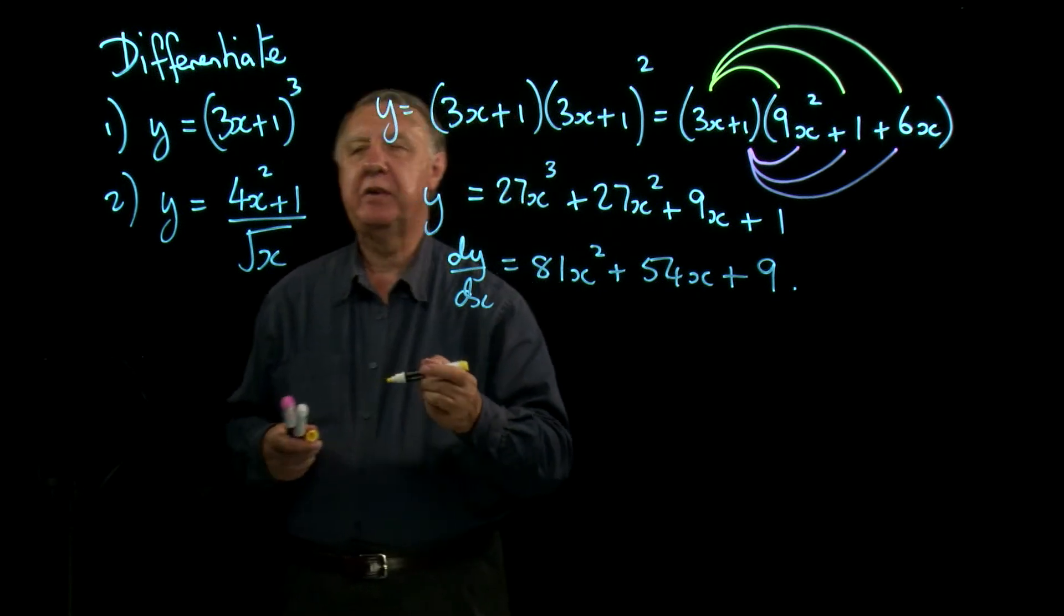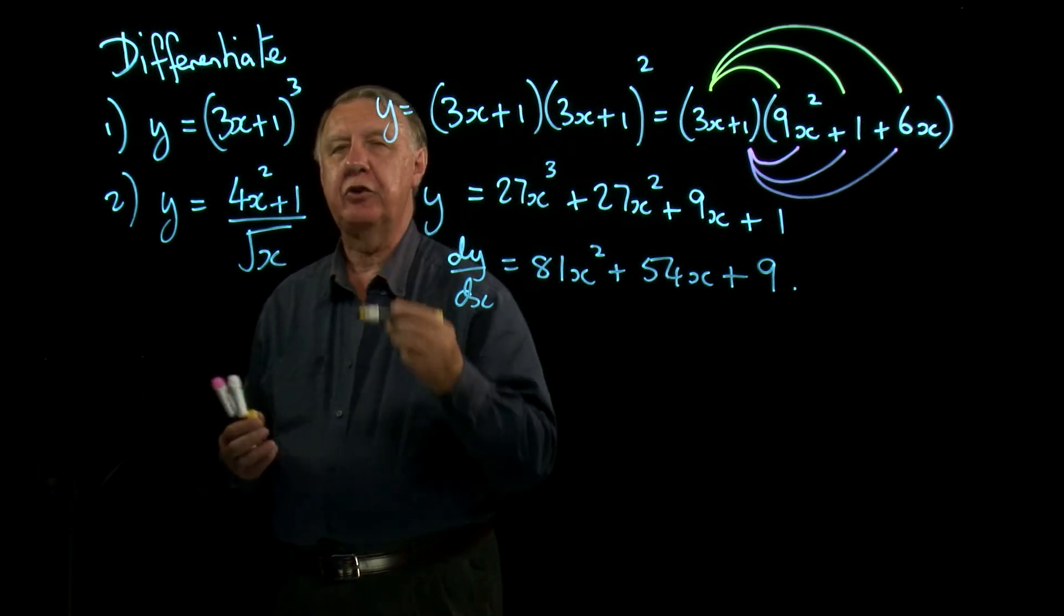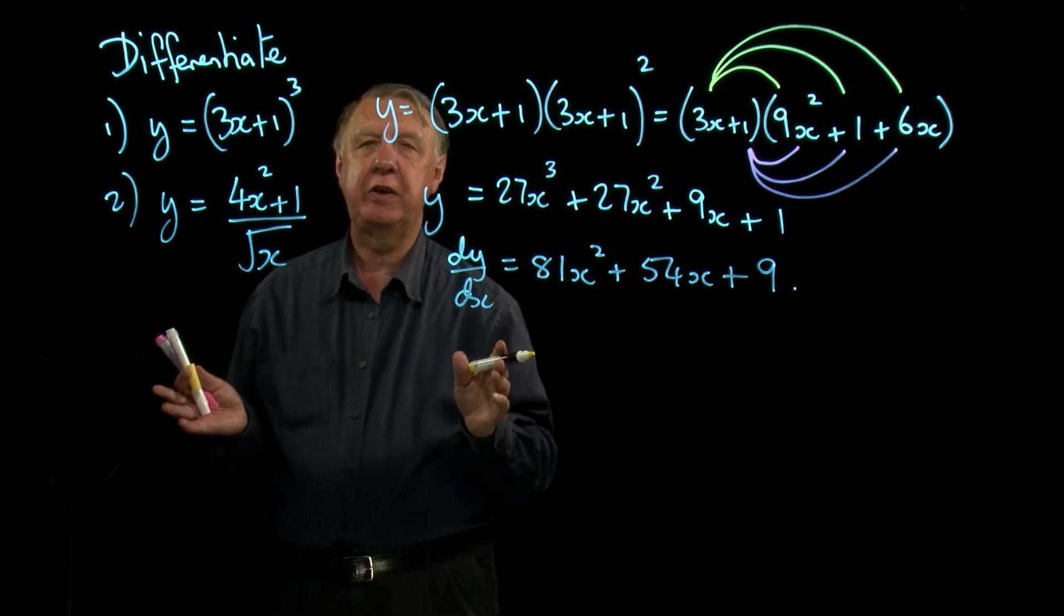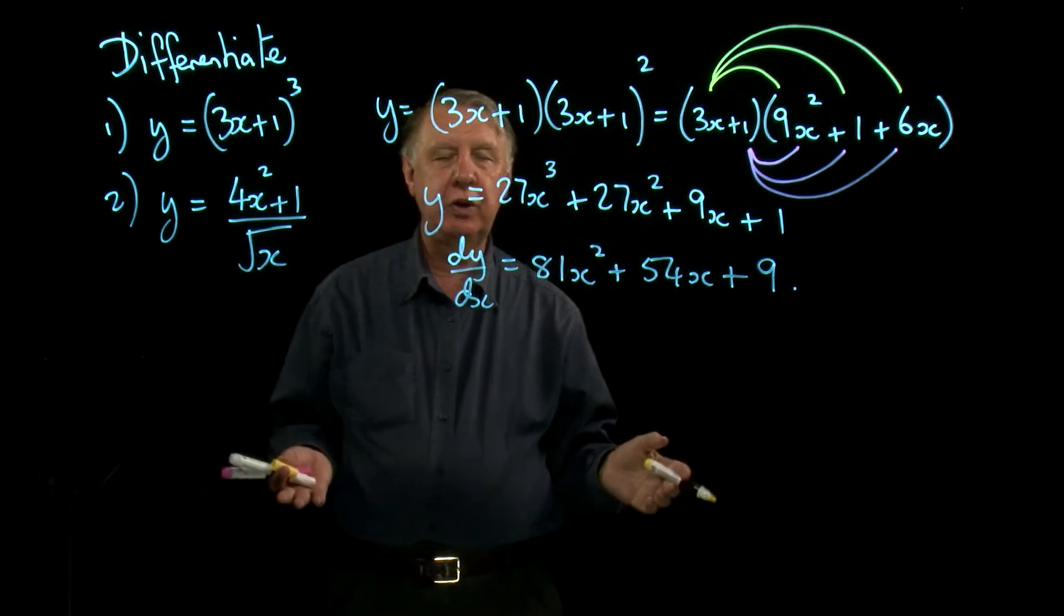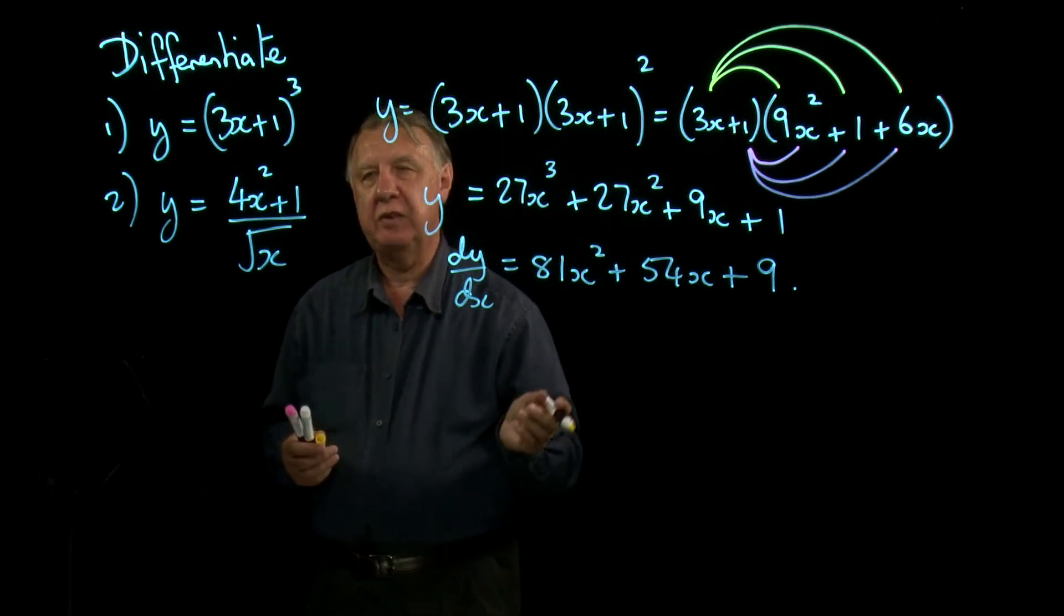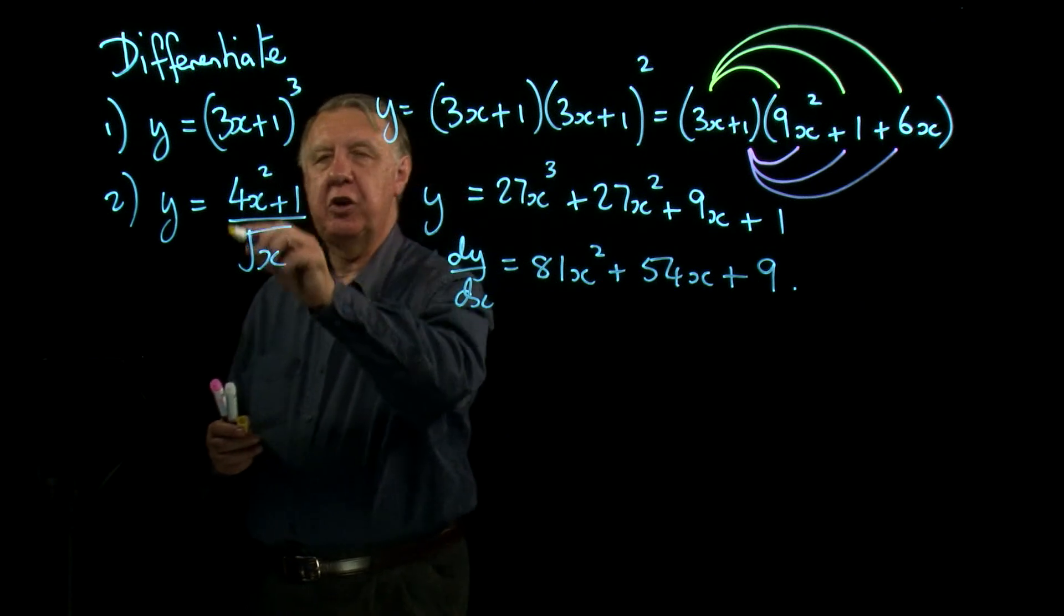Now the second one is an algebraic fraction. In other words, it's a quotient. You have no rules for differentiating quotients. You can only differentiate x to the n, added or subtracted. So you have to change this completely.